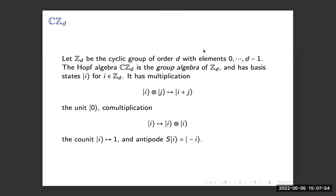A very simple example of a Hopf algebra is abelian group algebras. In particular, if we have the cyclic group of order D, then the group algebra CZ_D has a basis of states given by the group elements, with multiplication given by the linear extension of multiplication in the group. This obviously has the unit being the identity element of the group, comultiplication is just a coherent copy, the counit is just a deletion map, and the antipode is just the group inverse.